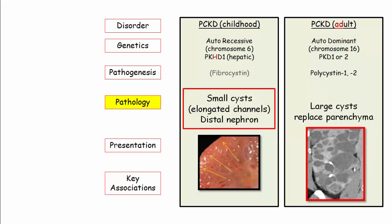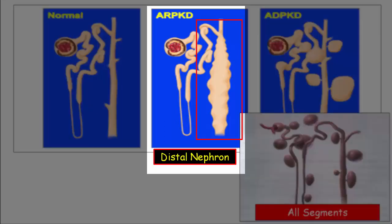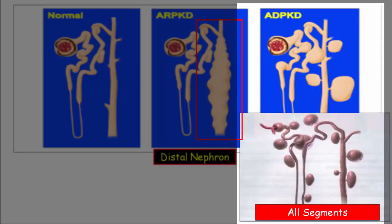Moving to the pathologic description, this is most useful for childhood PKD. This disorder is characterized by small cysts with elongated channels of the distal nephron running at right angles to the cortical surface. In contrast to medullary sponge kidney, these cysts replace both the medulla and cortex, generating a characteristic sonographic appearance on prenatal screening. Compare that with the autosomal dominant form, which features large cysts that eventually replace renal parenchyma, involving all nephron segments.